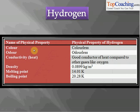Hydrogen is colourless and odourless. It is also a very good conductor of heat — a conductor of heat basically transfers heat from one point to the other, so hydrogen can transfer heat much more easily than oxygen and other gases. The density of hydrogen gas is 0.09 kg per metre cube, meaning 1000 litres of hydrogen gas weighs 0.09 kg.